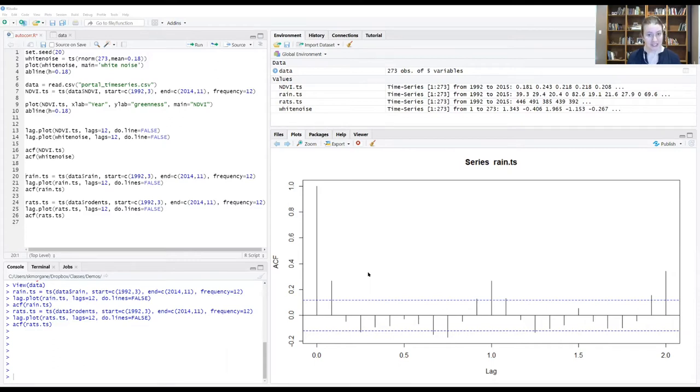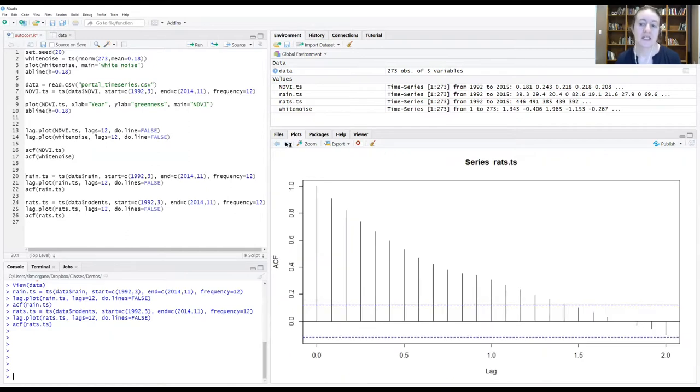When you converted the precipitation data and rodent data into time series objects and ran them through the ACF function, you should have found that rain, which I'm showing here, looks very similar to the NDVI signal. But you probably received a surprise when we looked at the rodent data, because this signal is really different.